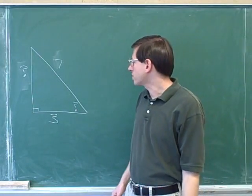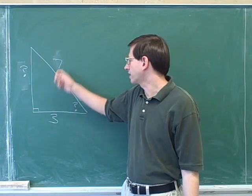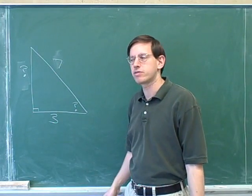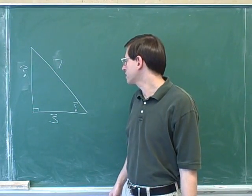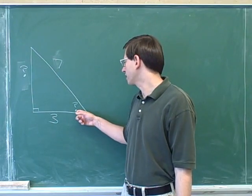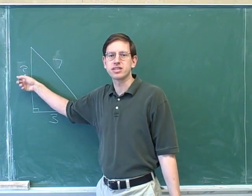Here's another problem. Here we have a right triangle where one side has a length of seven and one side has a length of three. I'd like you to pause the video and try to figure out how big is this angle and how big is this side.